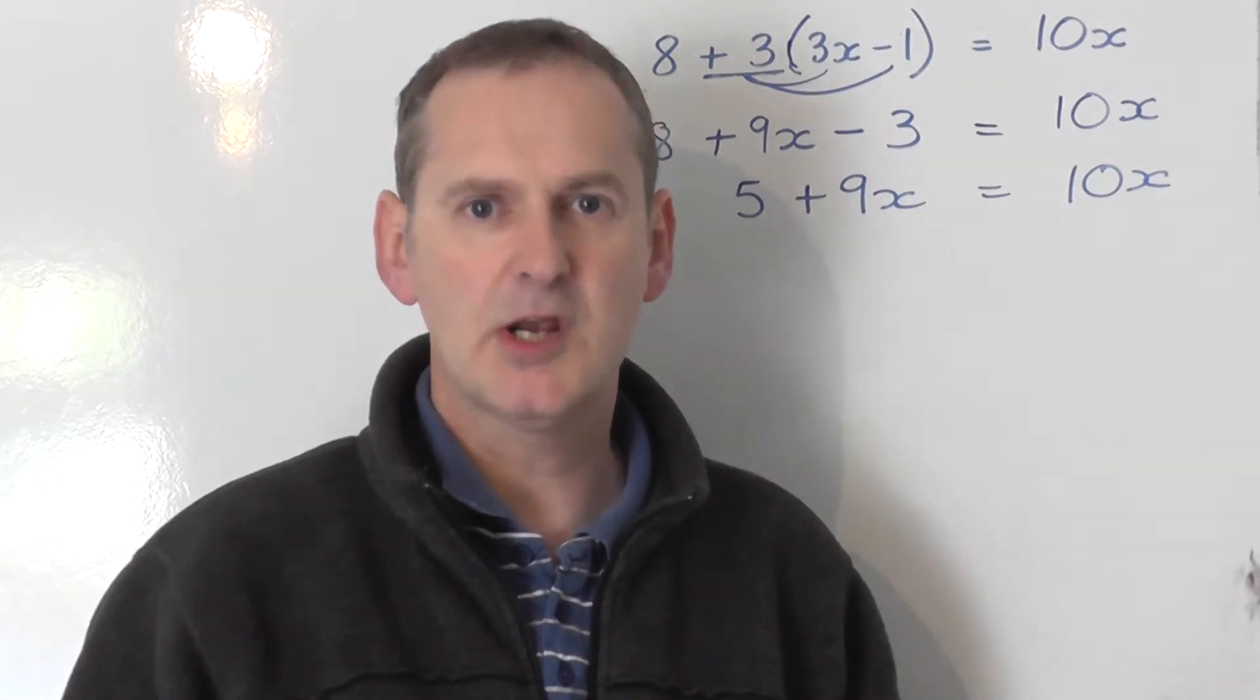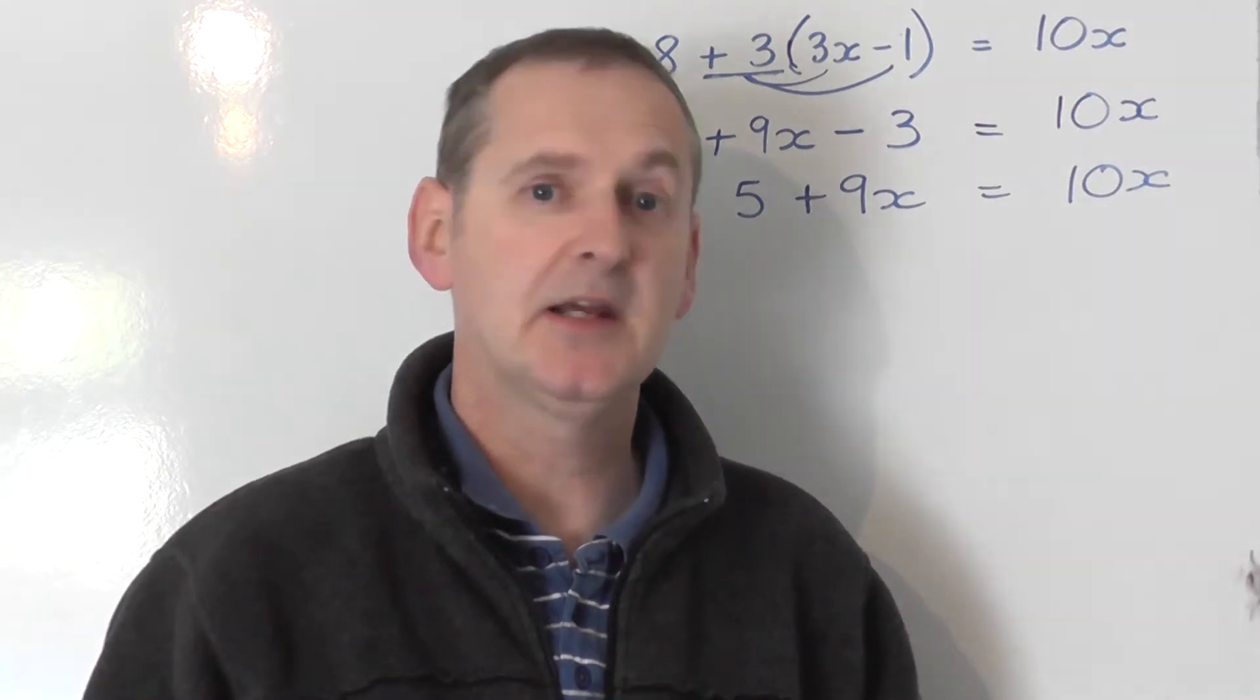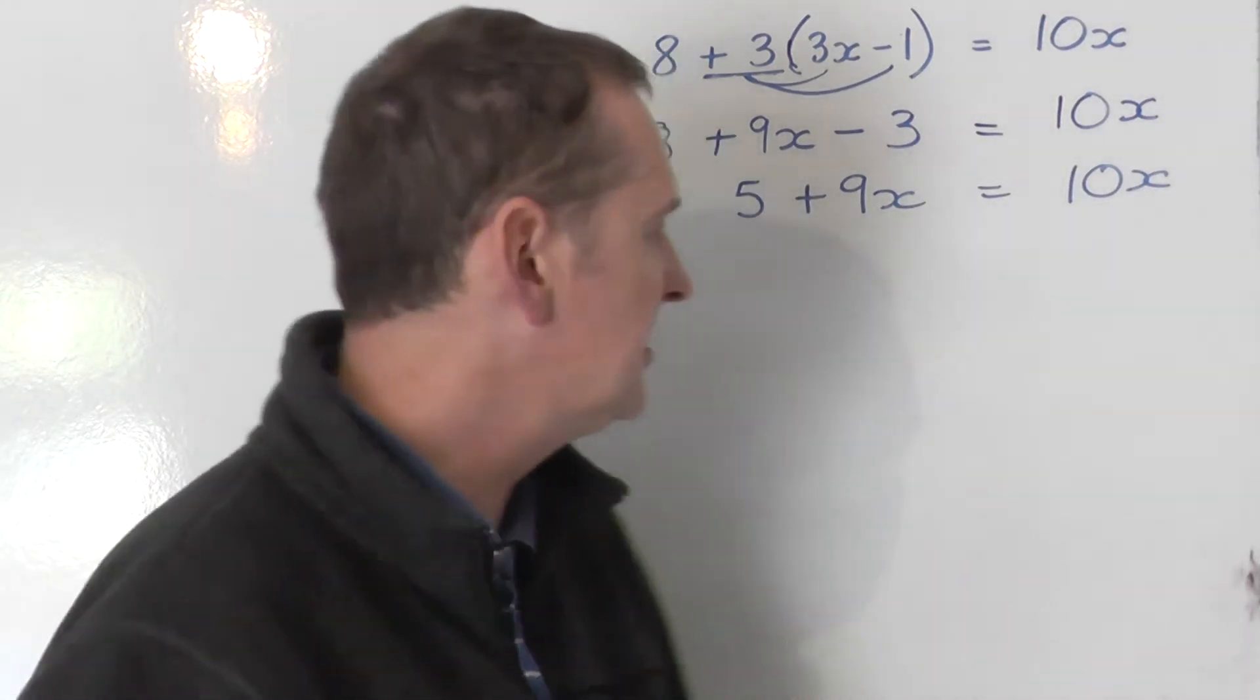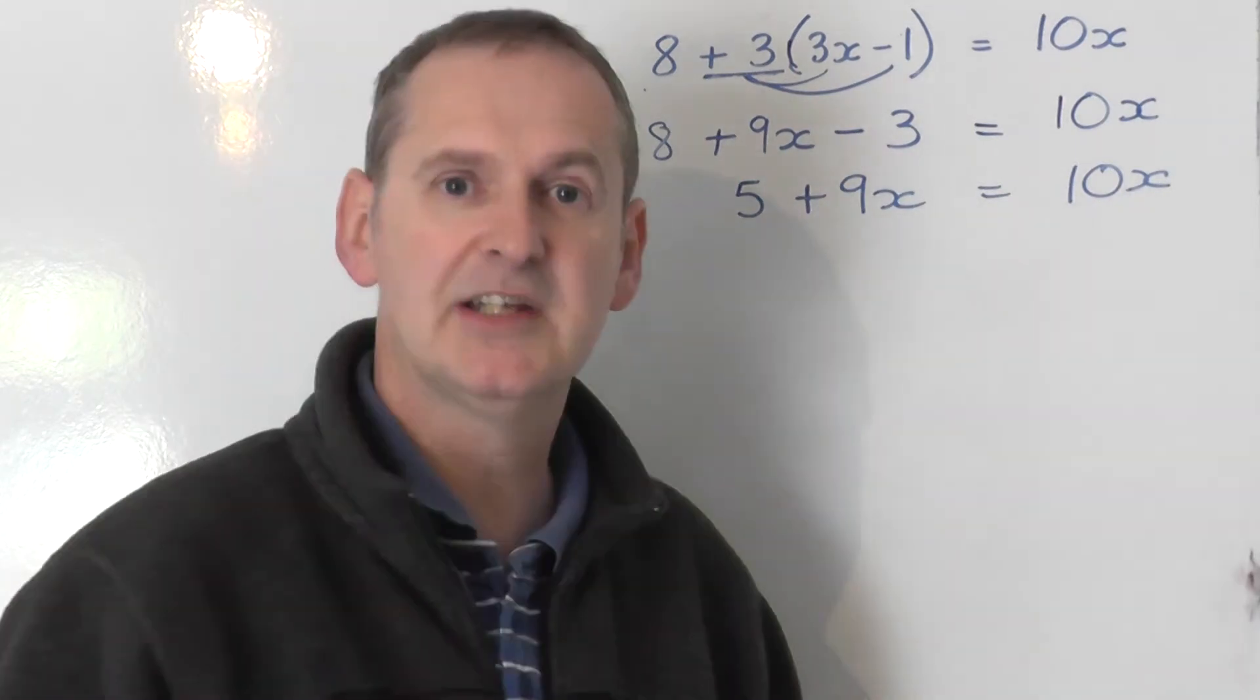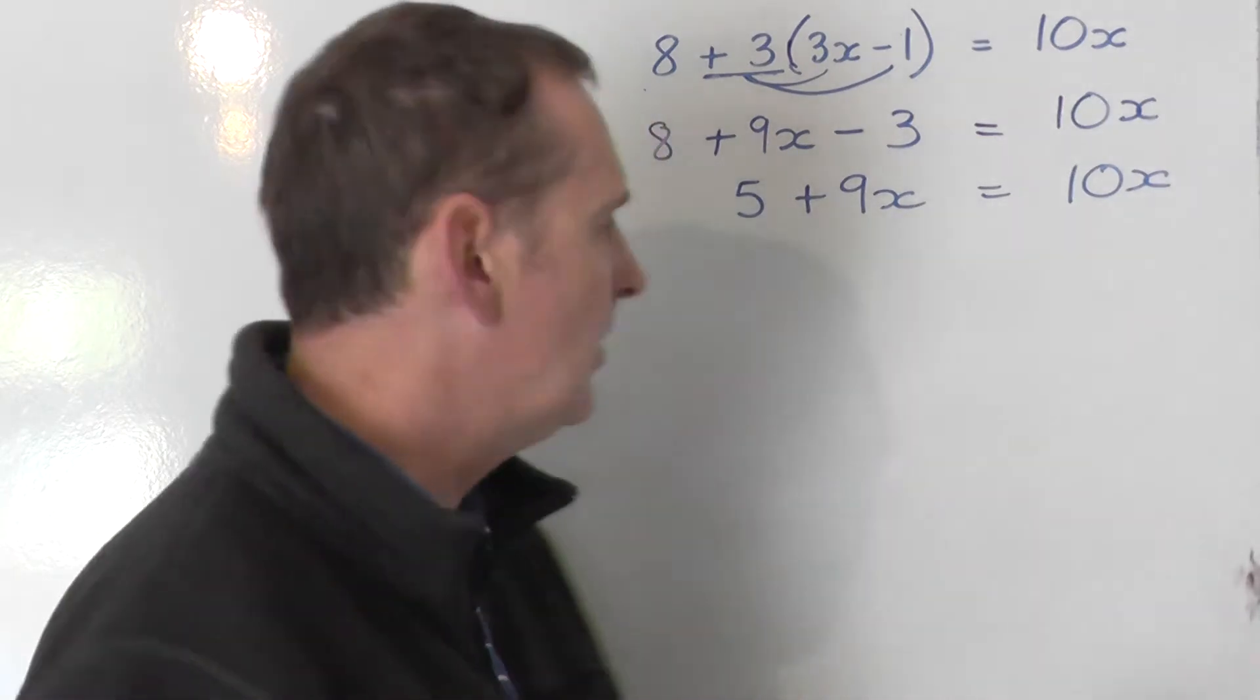OK, now what I've got is an equation with x's on both sides of the equal sign. So I'm going to collect the x's on the side with most x's. And in this case you can see there's more x's on the right hand side. So I'm going to take the x's to the right hand side and collect the number terms.